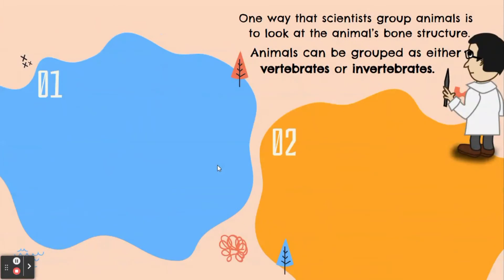One way that scientists group animals is to look at the animal's bone structure. Animals can be grouped as either vertebrates or invertebrates. Let's talk about them one by one.